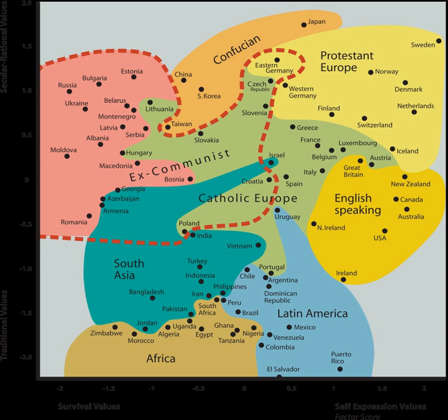The map shows where societies are located in these two dimensions, with clusters of countries reflecting shared values rather than geographical closeness. Traditional values emphasize the importance of religion, parent-child ties, deference to authority, absolute standards, and traditional family values. People who embrace these values also reject divorce, abortion, euthanasia, and suicide. Societies that embrace these values have high levels of national pride and a nationalistic outlook.